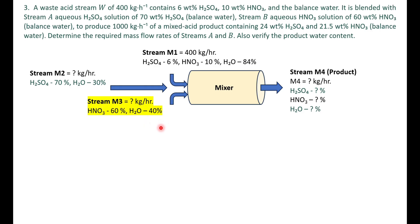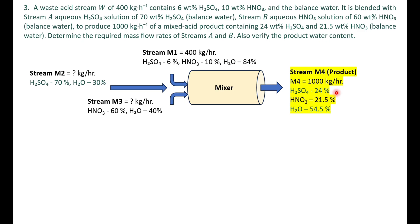All three streams mix together to form stream m4. The requirement is to produce 1000 kg/hr of product. Stream m4 must have 24 percent sulfuric acid, 21.5 percent nitric acid, and the remaining 54.5 percent water — these all sum to 100 percent. We have now obtained all compositions for each stream.